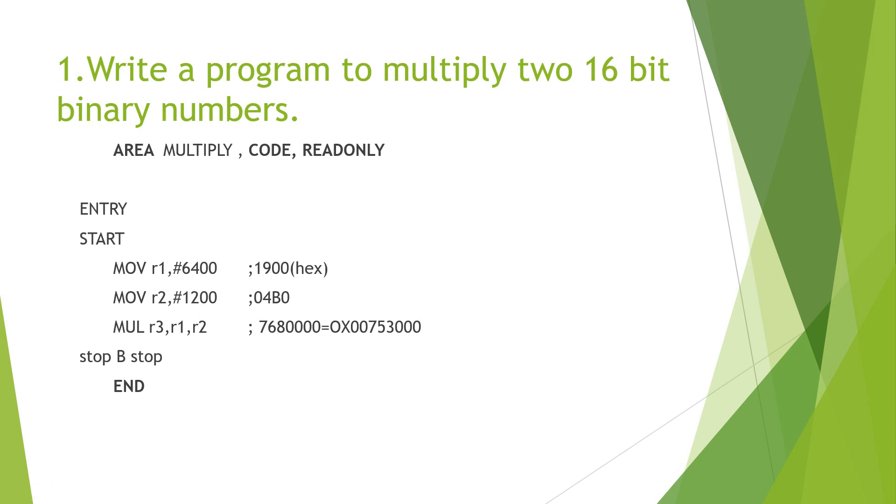You can give any name to it, but I specify it as multiply, so it is easier for us to know that it's a multiplication that we are doing. We have the assembler directive CODE READONLY. ENTRY is the starting point of the program. Start is a label that is specified. Now, the first instruction is the MOV.